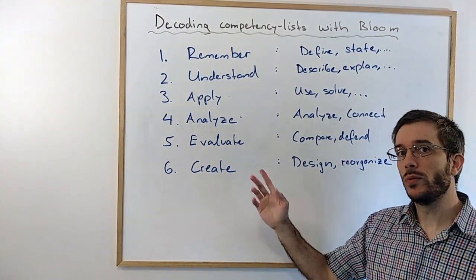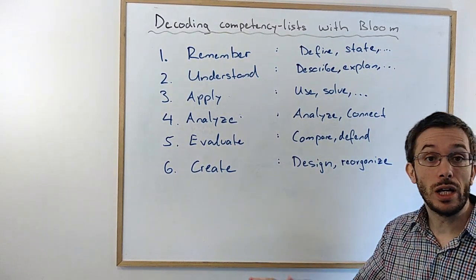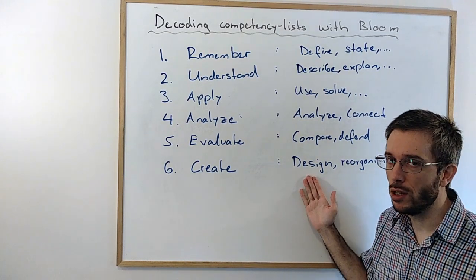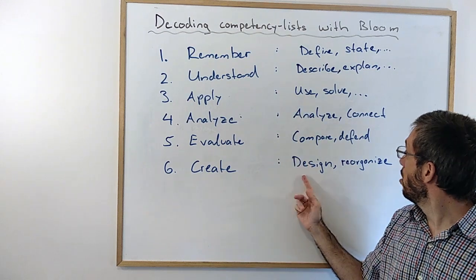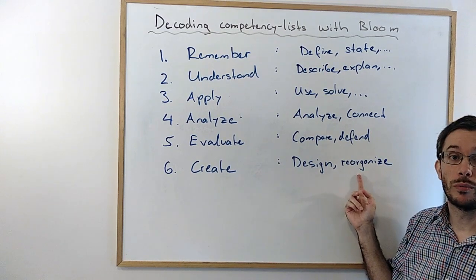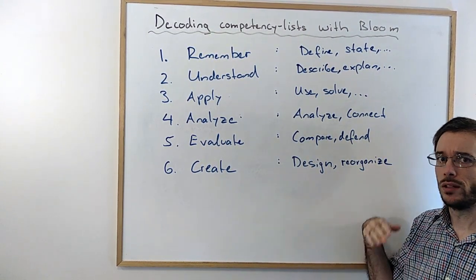The highest level in Bloom's taxonomy is create. At this level, you're able to design something. For example, you could design your own test to evaluate competencies. You can reorganize things. You can make your little cheat sheet where you put all the important information that you learned in the class on one little sheet. You make a summary.